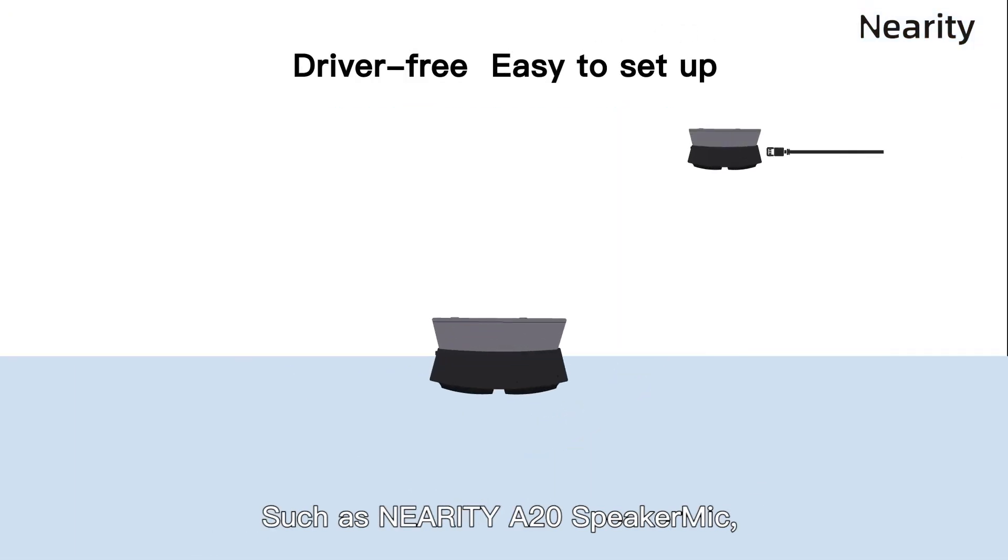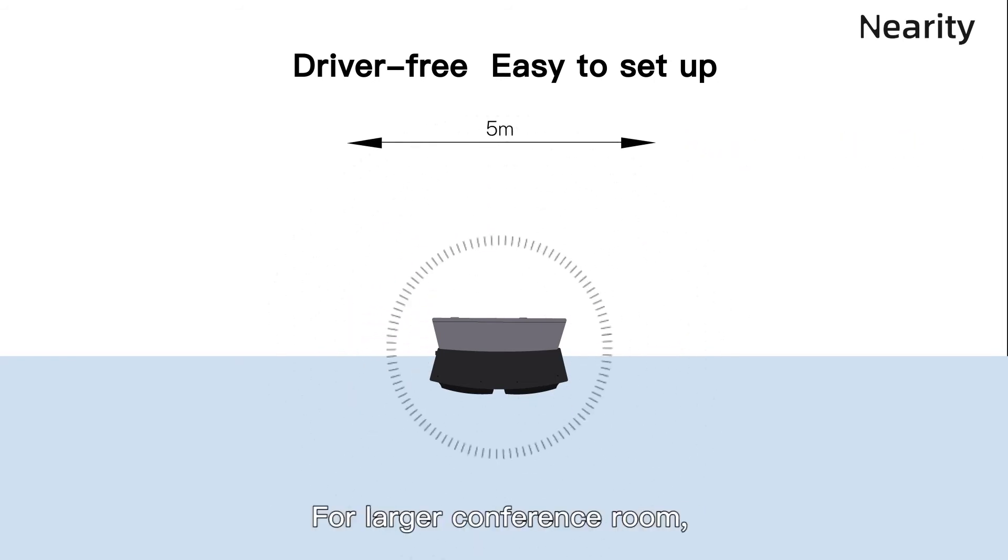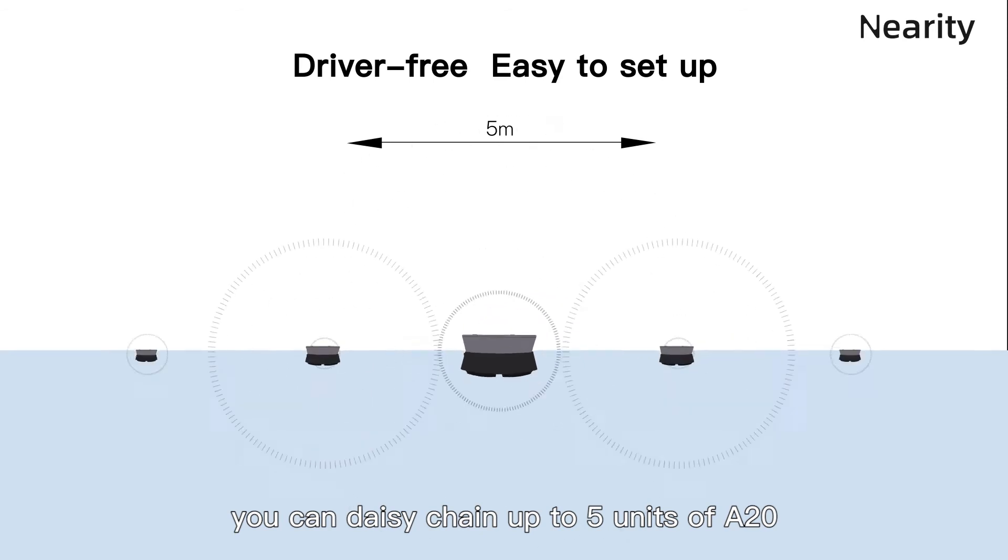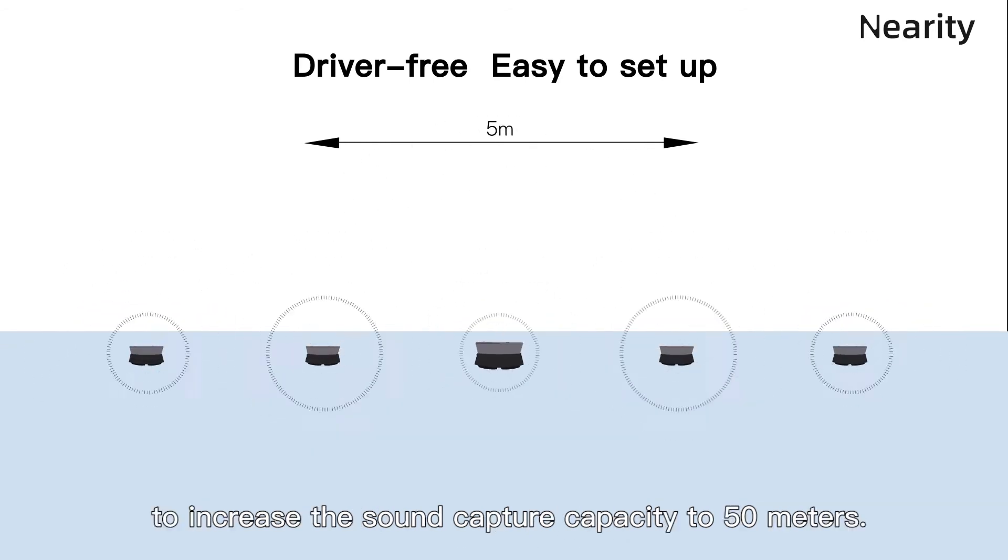The Nearity A20 speaker mic can pick up sound within 5 meters. For larger conference rooms, you can daisy chain up to 5 units of A20 to increase the sound capture capacity to 15 meters.